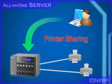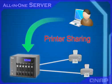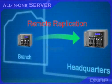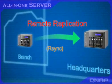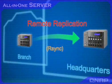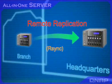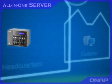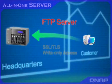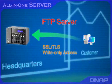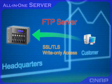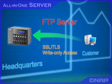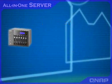The NAS supports up to 3 USB printers for sharing in the office. The data on the NAS can be backed up to another Turbo NAS or RSync server over LAN or WAN. Customers and third-party partners can access the NAS by FTP, and you can configure write-only access rights to prohibit reading or editing data via FTP.